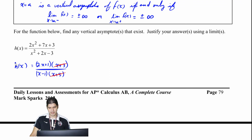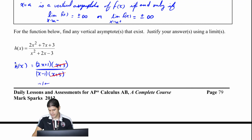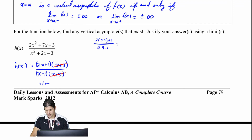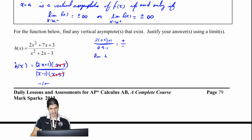So what I notice is that the x plus 3's divide out. I want to prove that a vertical asymptote exists using my limit definitions. Since I see that something could be happening at positive 1, let's look at it from the left side. I'll use 0.9: 2 times 0.9 plus 1 over 0.9 minus 1. The sign in my numerator is positive, and in my denominator it's going to be negative. So the limit of h of x as x approaches 1 from the left side is going to come out to be negative infinity.